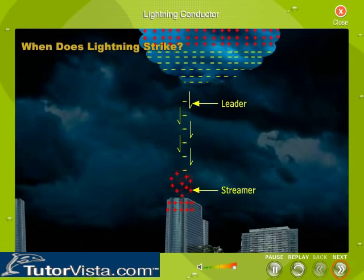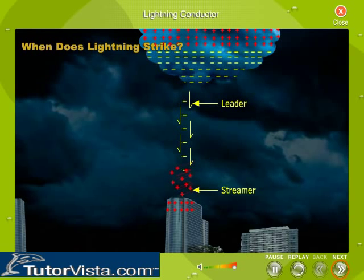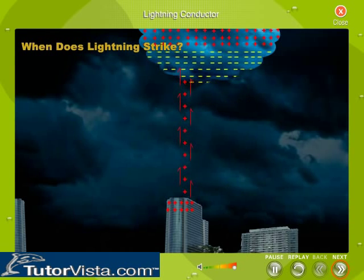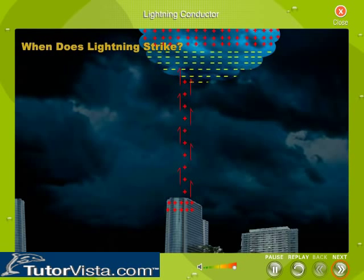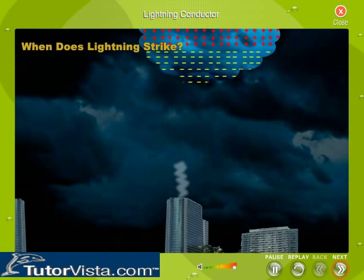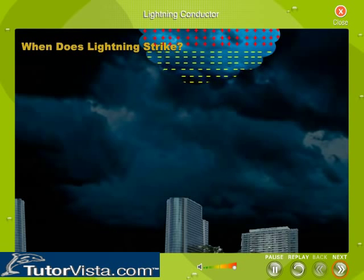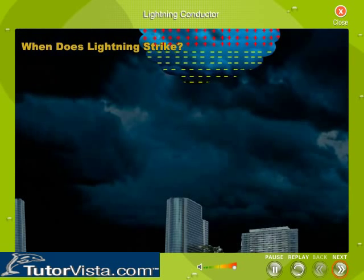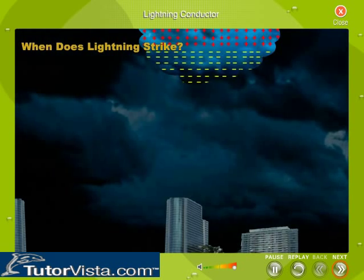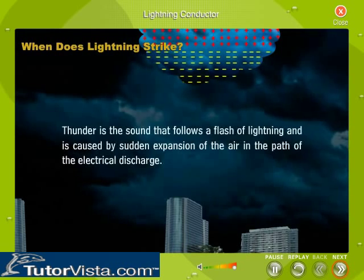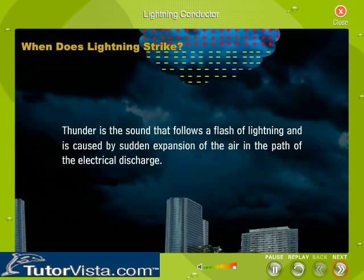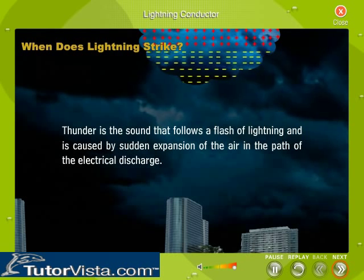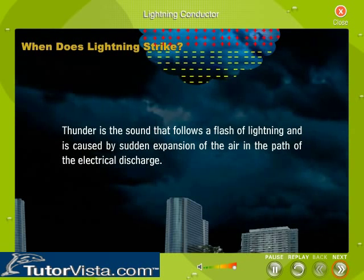The leaders attract other channels of charged air created by protons on the ground, called streamers. When the stepped leader from the cloud meets a streamer from the ground, a conductive path is created. An electrical current called the return stroke travels from the ground to the thundercloud. This return stroke releases tremendous energy, bright light, and produces thunder. Thunder is the sound that follows a flash of lightning and is caused by the sudden expansion of the air in the path of the electrical discharge.